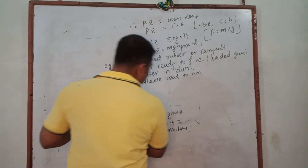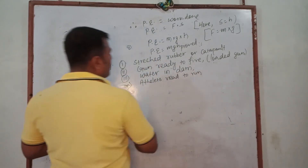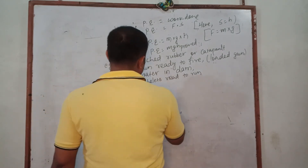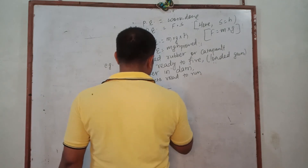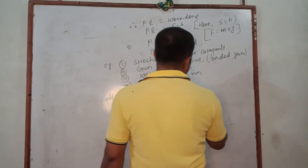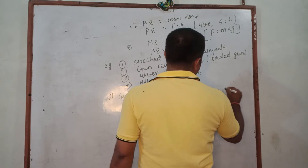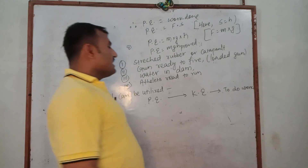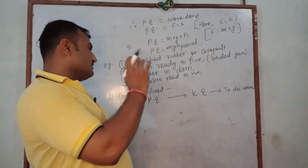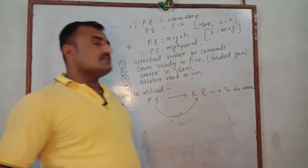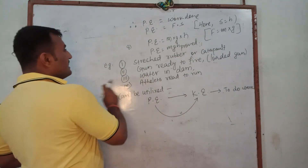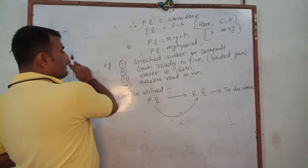Potential energy can be utilized by first converting it into kinetic energy, and that kinetic energy is then applied to do work. Potential energy cannot be utilized directly in the same state — first we convert potential energy to kinetic energy, and that kinetic energy is useful to do work.